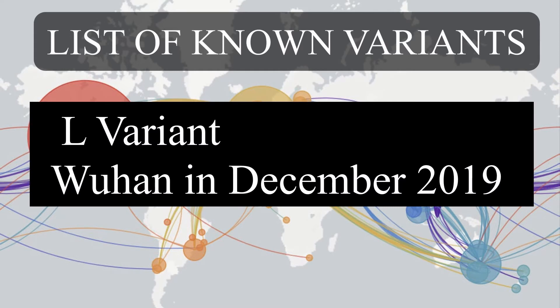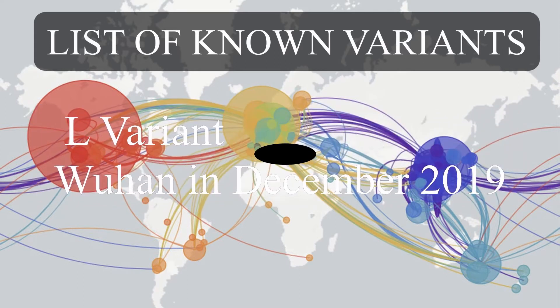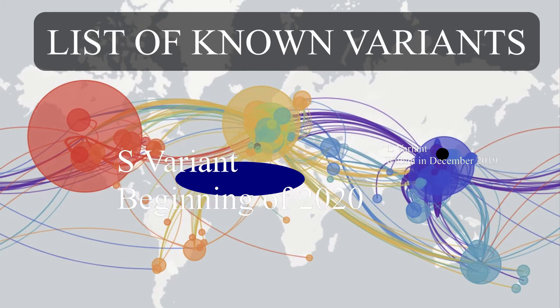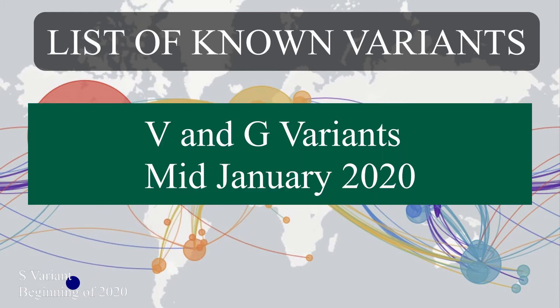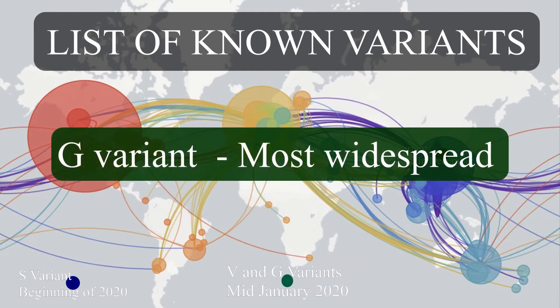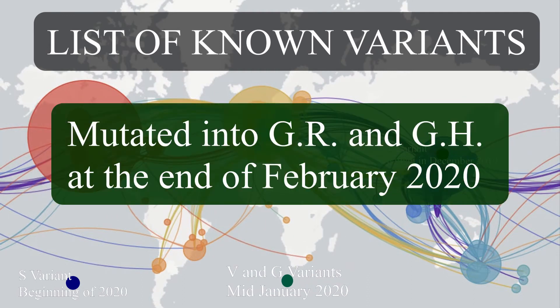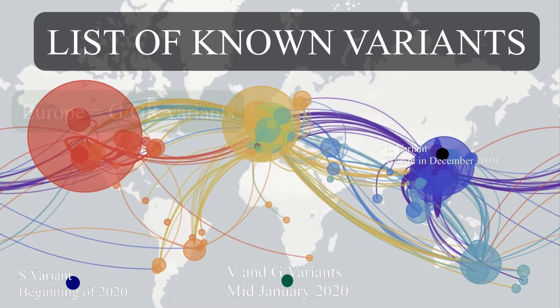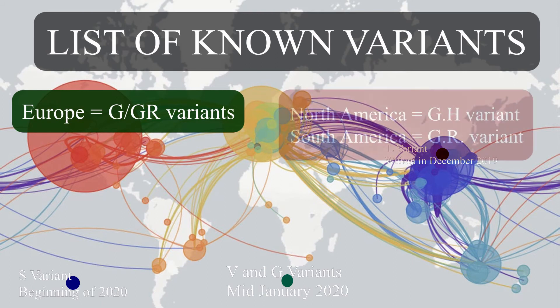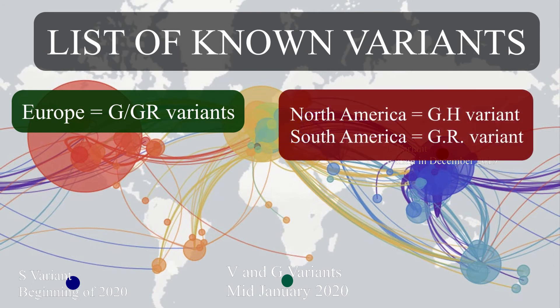The L variant appeared in Wuhan in December 2019. The S variant appeared at the beginning of 2020. The V variants appeared since mid-January 2020. The G variants are the most widespread, and it mutated into GR and GH at the end of February 2020. The Europe area is exposed to the G and GR variant mainly. The GH variant is widespread in North America and the GR variant in South America.